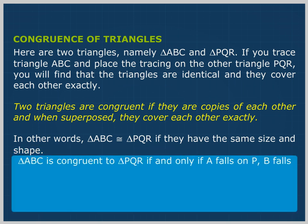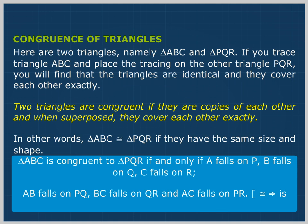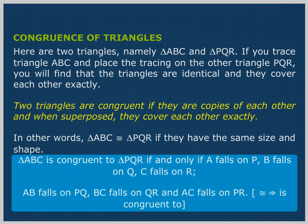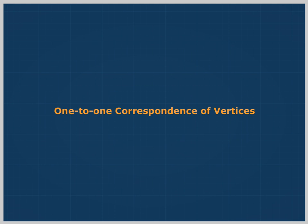Triangle ABC is congruent to triangle PQR if and only if A falls on P, B falls on Q, C falls on R, AB falls on PQ, BC falls on QR, and AC falls on PR. This establishes a one-to-one correspondence of vertices.